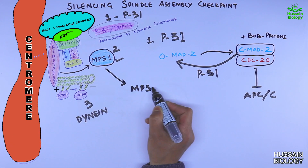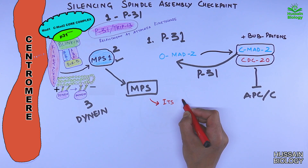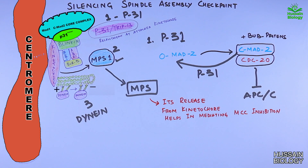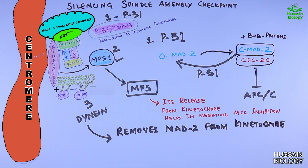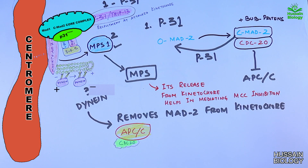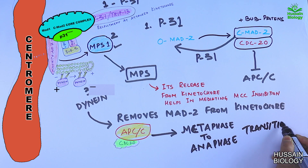The second mechanism is via the MPS1 protein, which also helps mediate the inhibition of the MCC protein, silencing the SAC. The third important mechanism is through the dynein motor protein — it strips off some proteins from the kinetochore, like MAD2, which means CDC20 protein is left activated. This CDC20 protein then binds with the APC protein and mediates the transition from metaphase to anaphase.